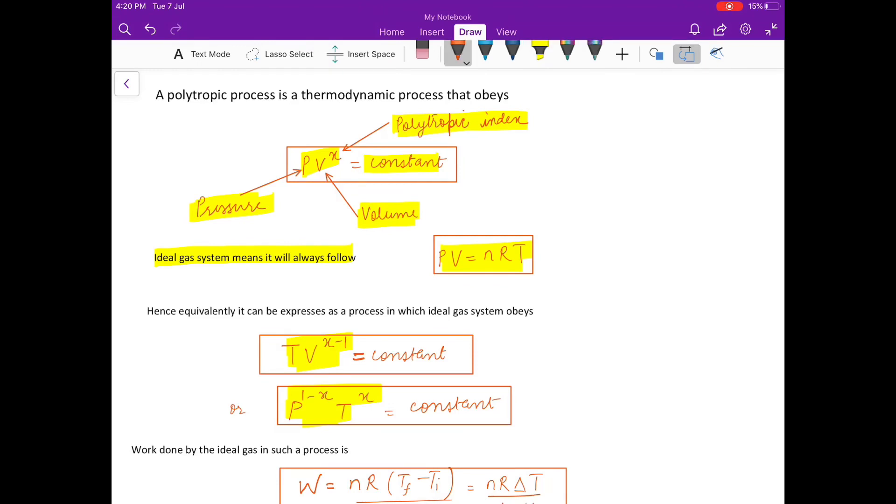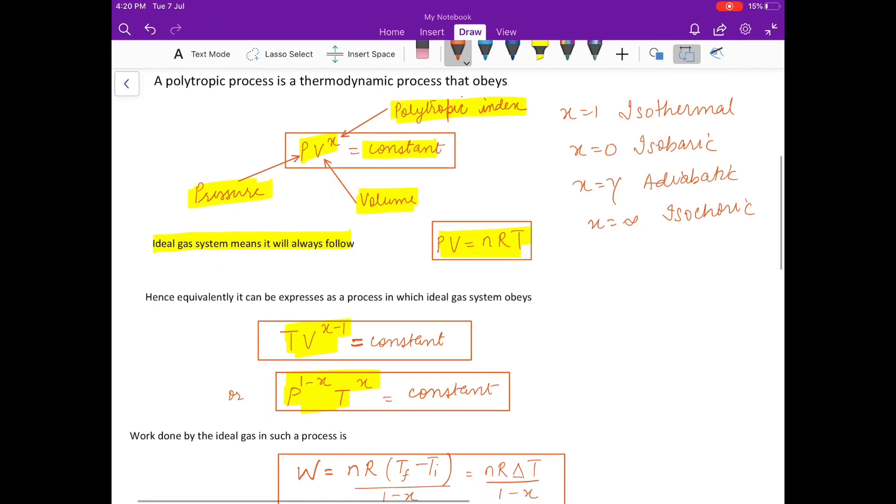Now, because it is an ideal gas, just remember this polytropic is not a single process. It can describe many expansion, many compression. For example, if I put X equal to 1, it is PV constant that means it will represent an isothermal process. If I put X is equal to 0, then PV to the power 0 that means pressure is constant. It will be an isobaric process. If I put X is equal to gamma which is CP by CV, then it represents an adiabatic process. Similarly, if I have X is equal to infinity sort of thing, it will be isochoric. So, it can describe many processes. Whenever you get a process in this form, we will say it is a polytropic process.